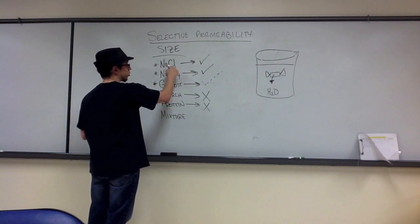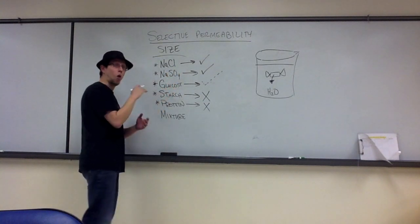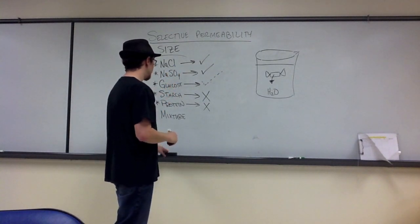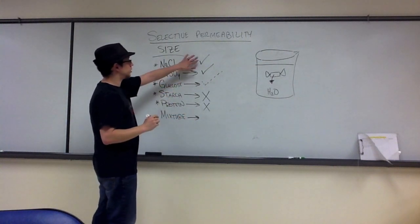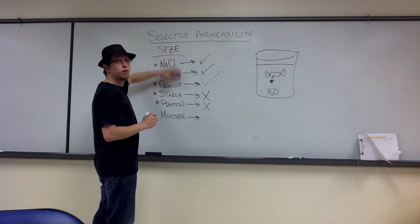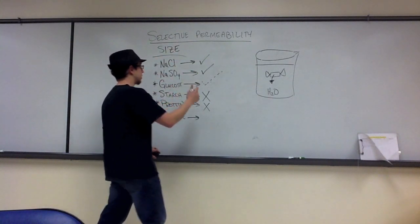So compared to the chloride ions, we're not going to see a whole lot of glucose permeate that bag. Now, in the mixture, if these three permeate their own individual solutions, permeate the bag.